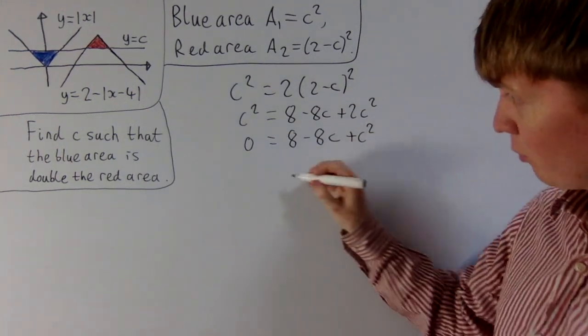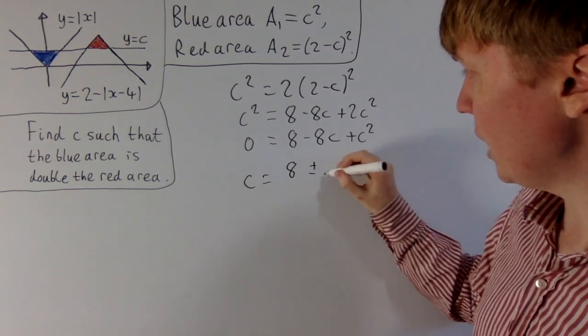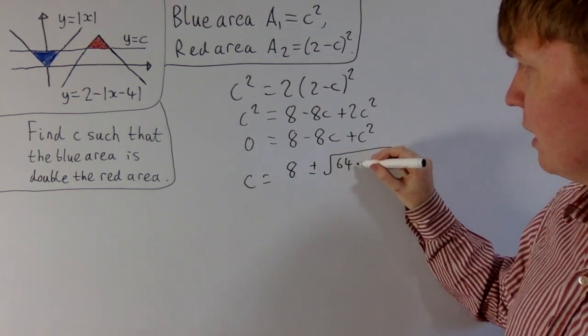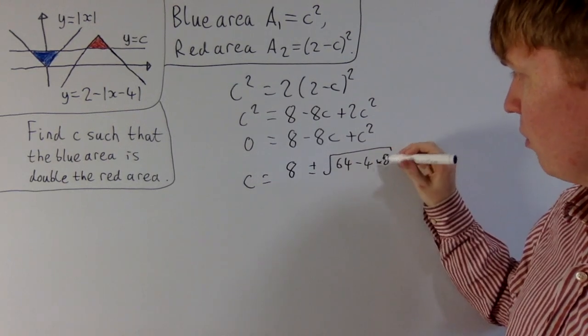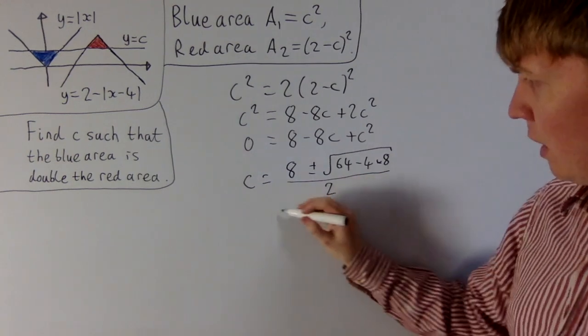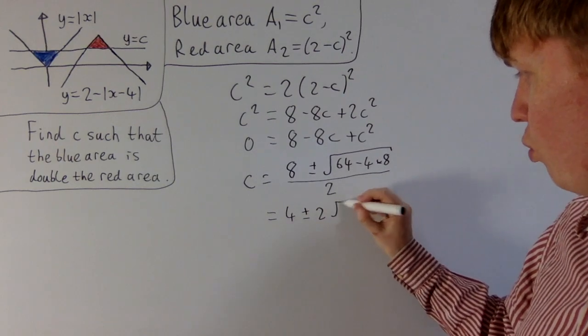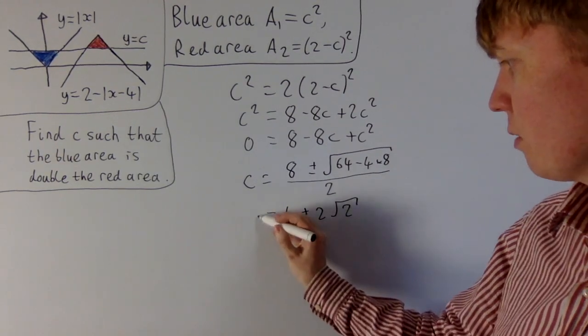Then we can solve this using the quadratic formula. We'll see that c is going to be equal to 8 plus or minus the square root of 8 squared, so 64 minus 4 times 8, all divided by 2. Then we should get two solutions here when we calculate this. We get 4 plus or minus 2 root 2 in the end for our values of c.